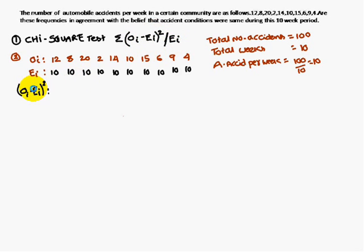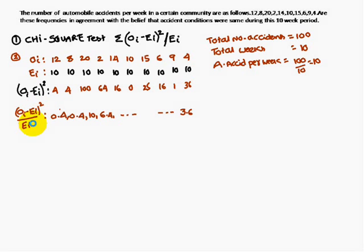Using the formula (oi - ei)²/ei, we calculate (12-10)² = 4, (8-10)² = 4, (20-10)² = 100, and so forth for all values. These are the (oi - ei)² values.